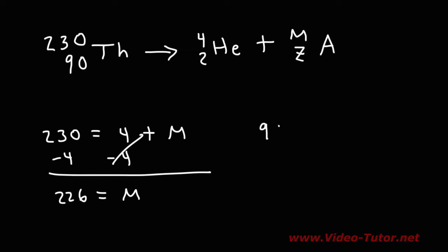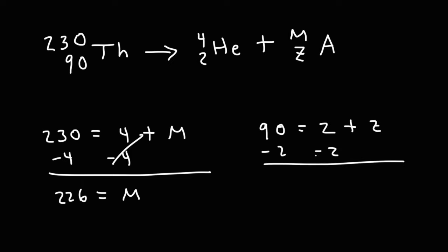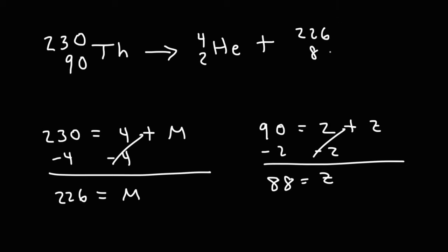Now using the numbers on the bottom — the atomic numbers — we have 90 is equal to 2 plus Z. Subtracting both sides by 2, we get Z is equal to 88. So our missing element has a mass of 226 and an atomic number of 88. The element with an atomic number of 88 is Ra, radium. That's how we balance this nuclear equation and identify the missing element.